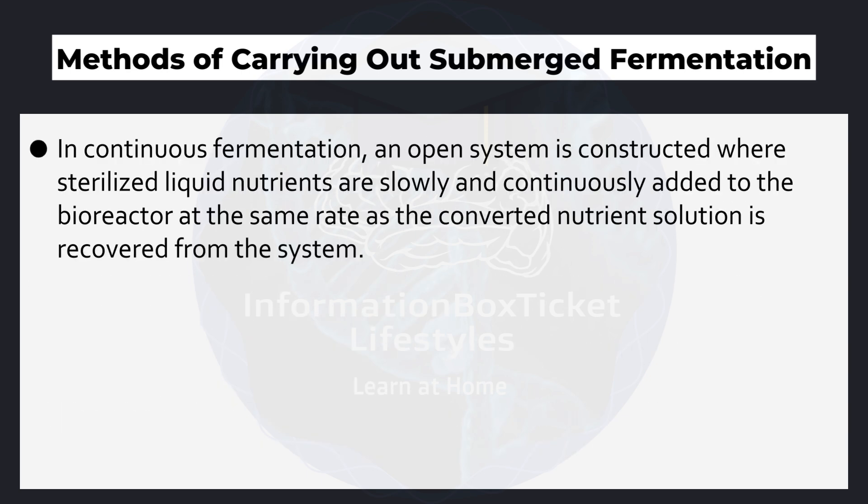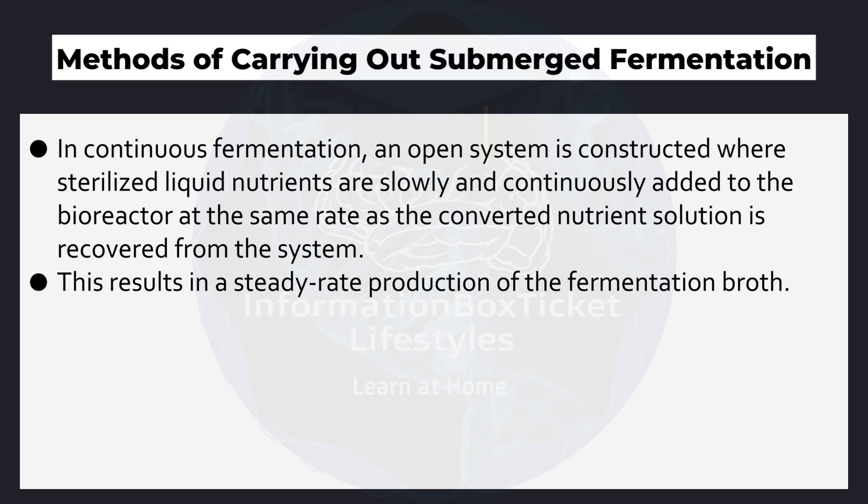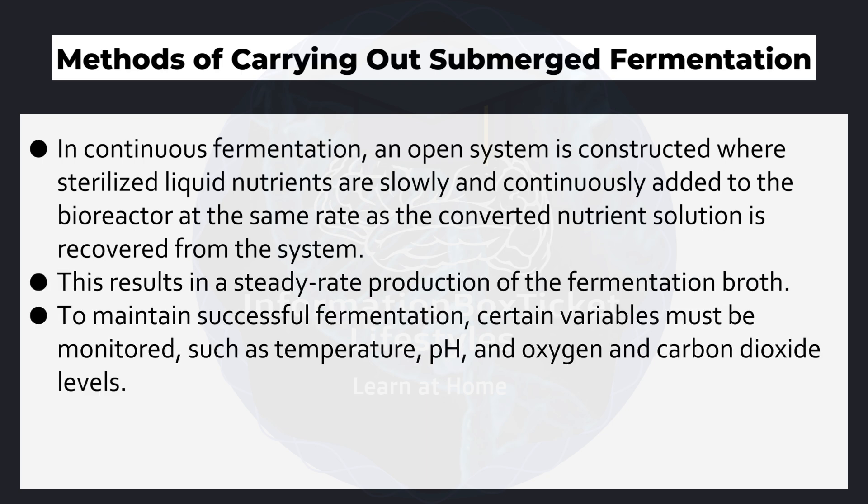In continuous fermentation, an open system is constructed where sterilized liquid nutrients are slowly and continuously added to the bioreactor at the same rate as the converted nutrient solution is recovered from the system. This results in a steady-rate production of the fermentation broth. To maintain successful fermentation, certain variables must be monitored, such as temperature, pH, and oxygen and carbon dioxide levels.